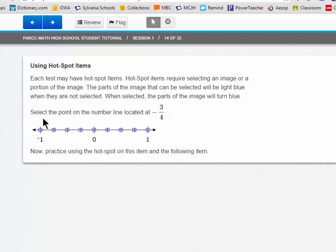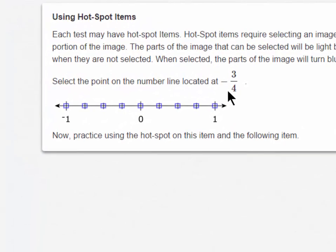So, select the point on the number line located at negative three-fourths. The question is answered. That is all you need to do. And if you review, you'll notice that in the review screen, it will show as answered.